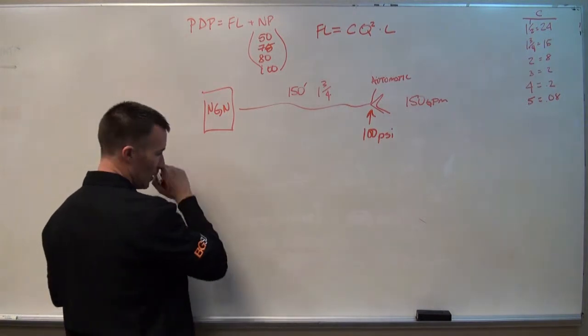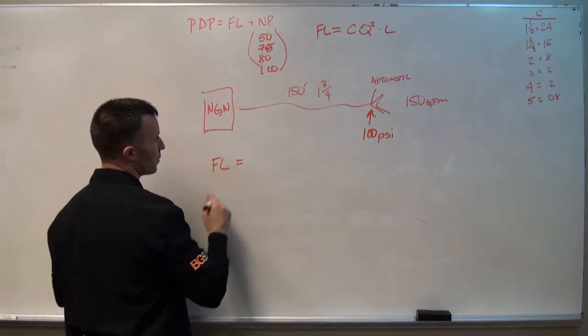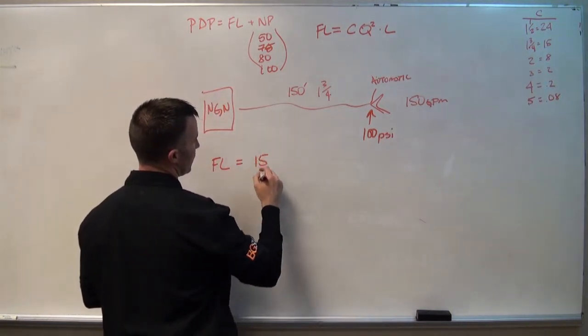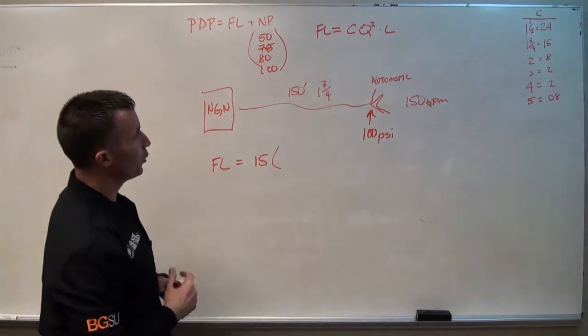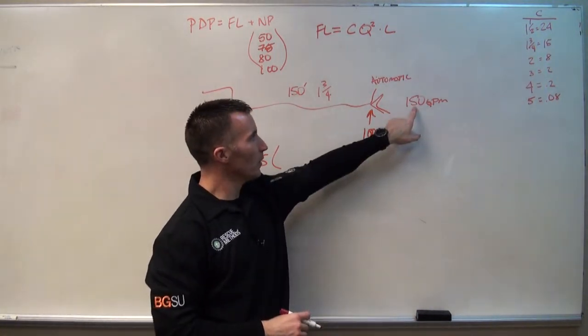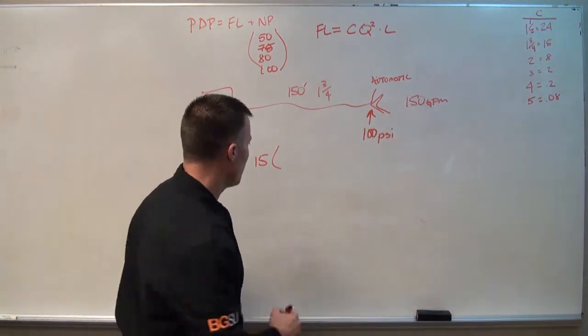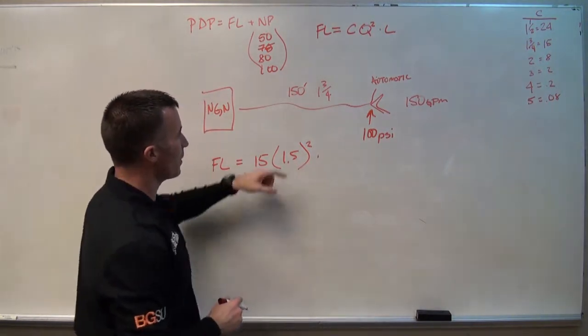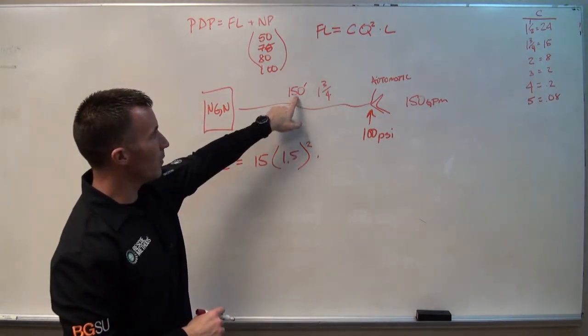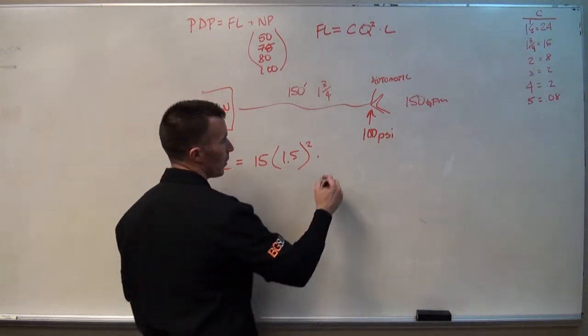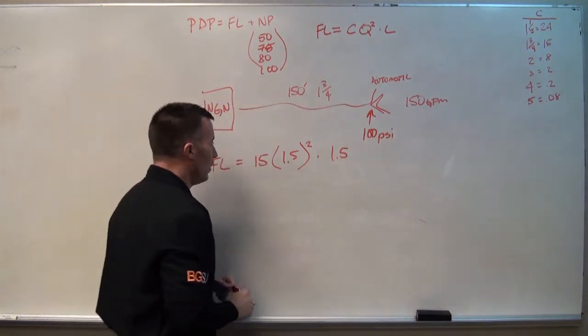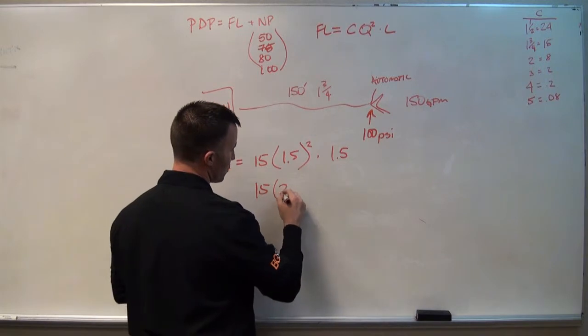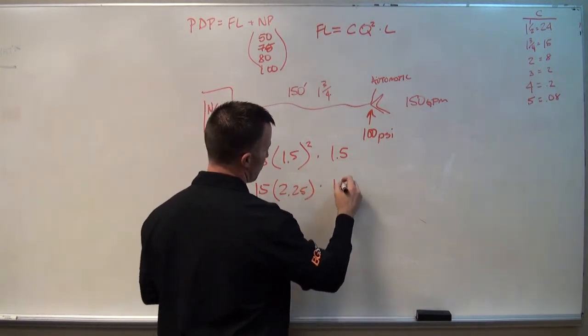Now let's start putting together our equation. In this case, friction loss equals—we have our coefficient is 15, q equals GPM divided by 100, so we have 150 divided by 100, we end up with 1.5. We're going to square that and then multiply. We have 150 foot of hose, so 150 divided by 100 is 1.5 again. So our friction loss ends up being 15 times 2.25 times 1.5.